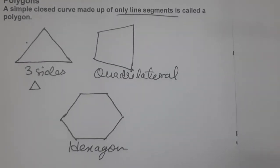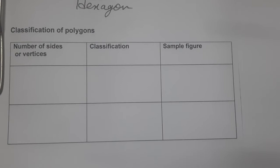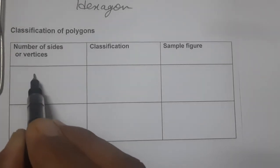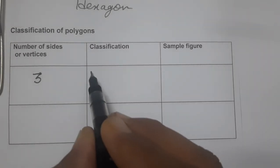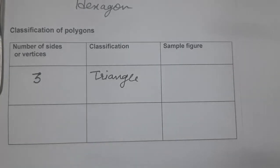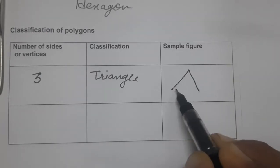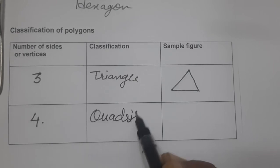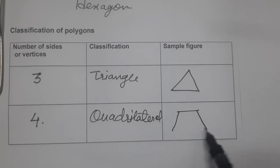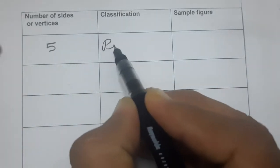Now let us classify all polygons. The polygon with the least number of sides is three, and we call it a triangle. Then comes four sides, which is called a quadrilateral.